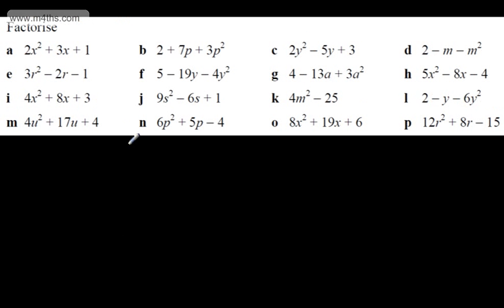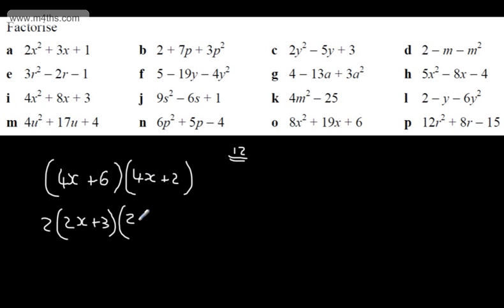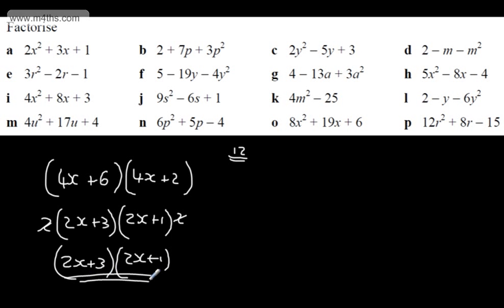Let's do another one — 4x-squared plus 8x plus 3. We put 4x in each bracket. Multiply 4 by 3 to get 12. I need two numbers that multiply to give 12 and add to give 8 — that's plus 6 and plus 2. There's a common factor of 2 in the first bracket, giving 2x plus 3. There's a common factor of 2 in the second bracket, giving 2x plus 1. Take the 2s out and cancel. So the factored expression is (2x+3)(2x+1).